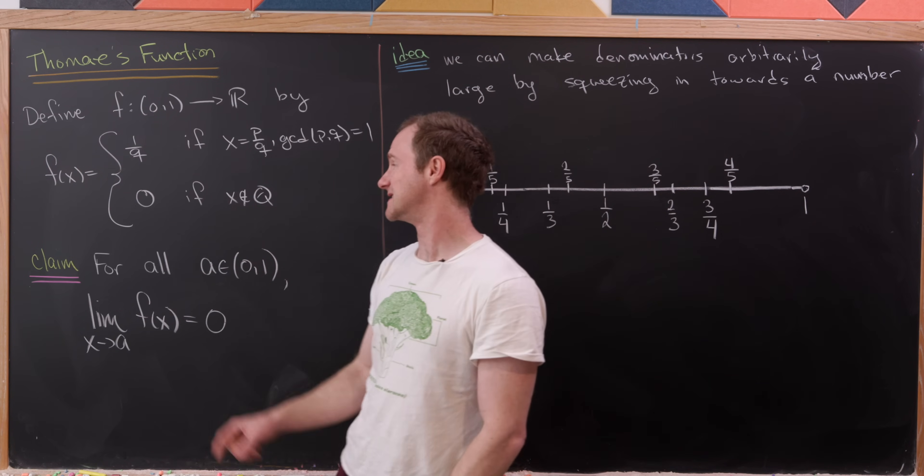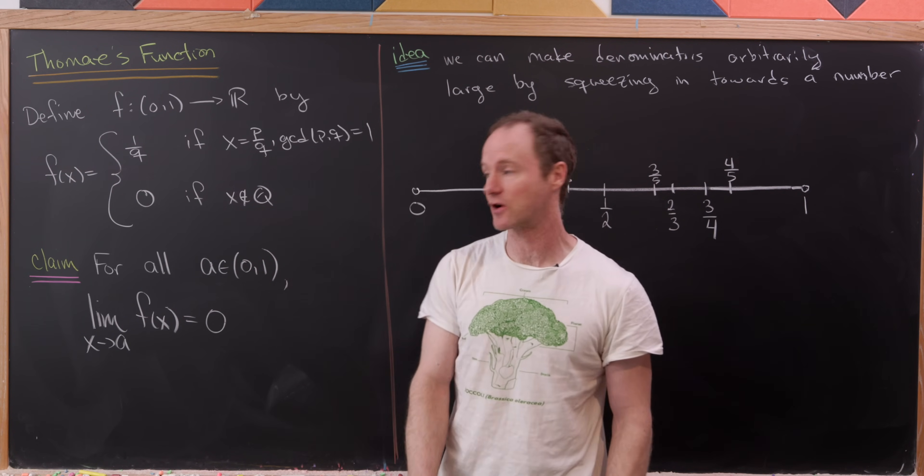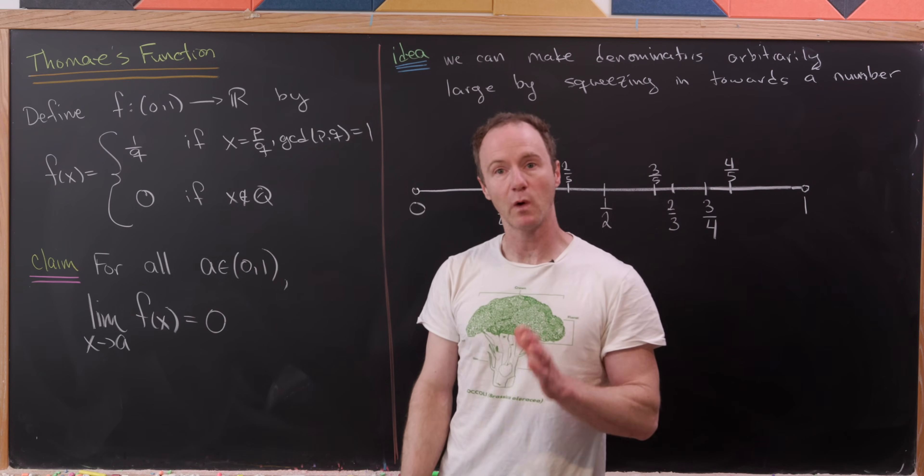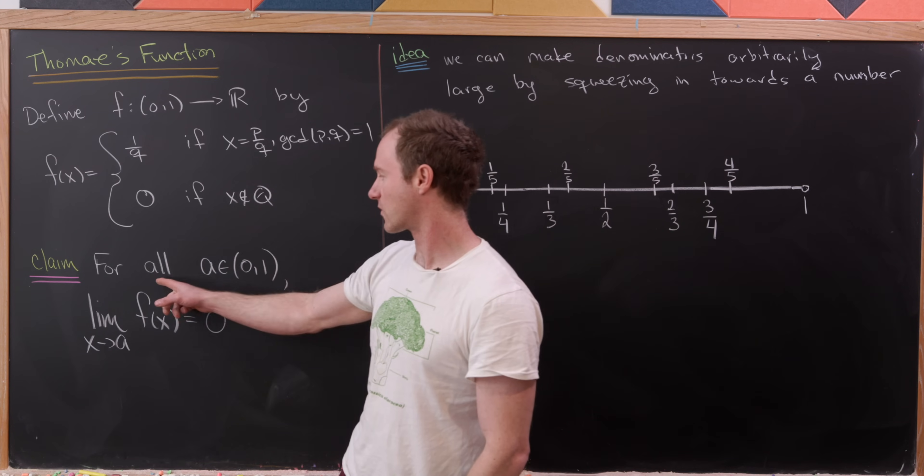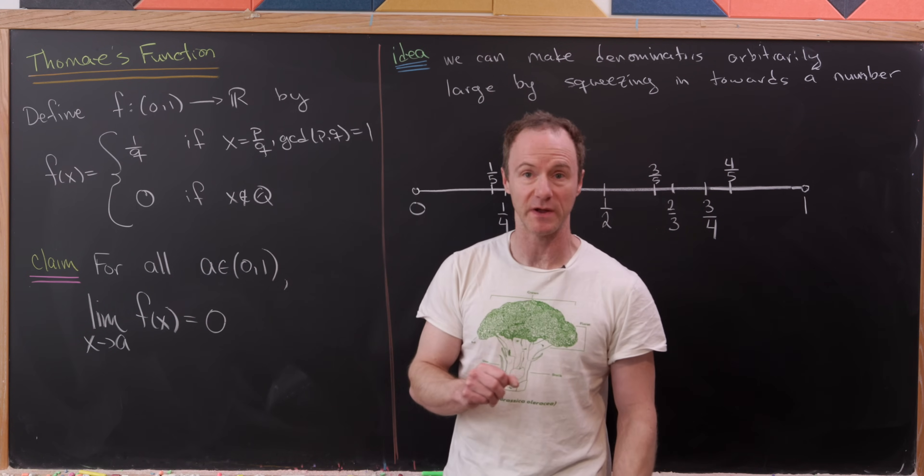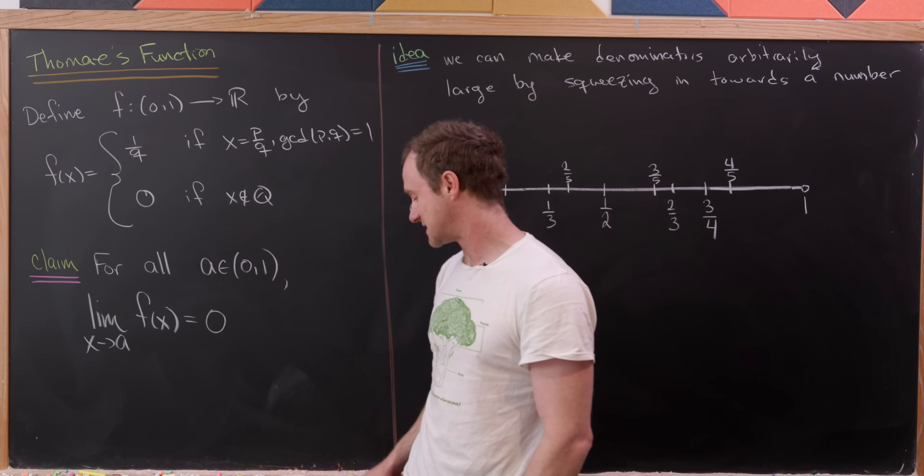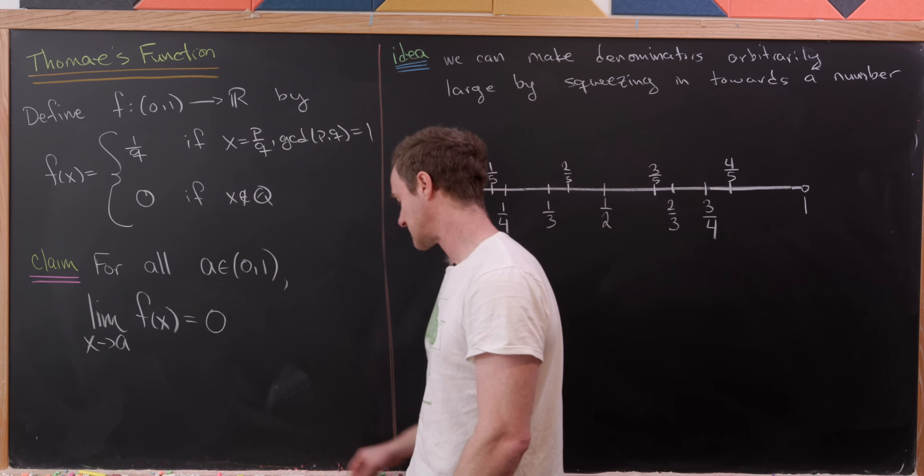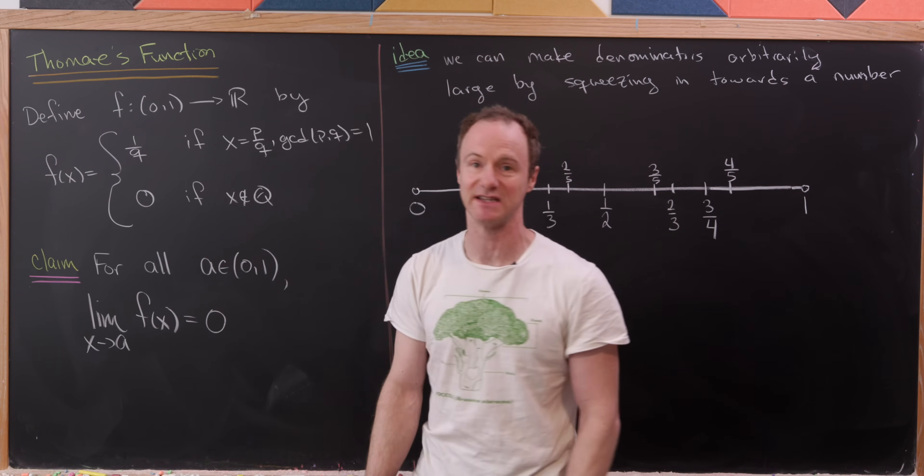And then f(x) is equal to 0 if x is irrational. And then what we'll prove here is that for all a on the open interval, the limit as x goes to a of f(x) is in fact equal to 0.